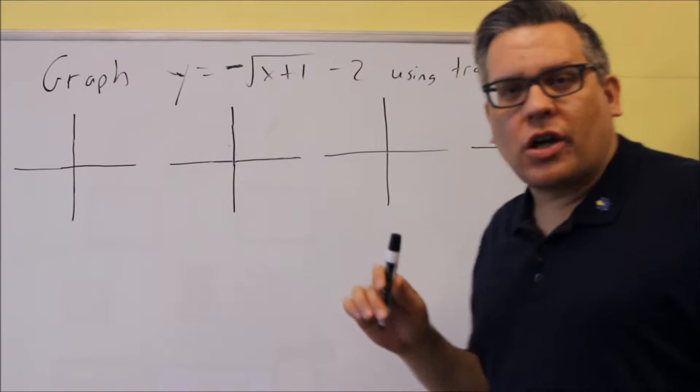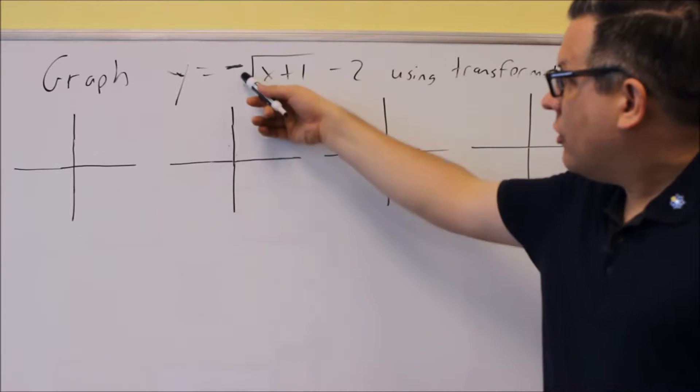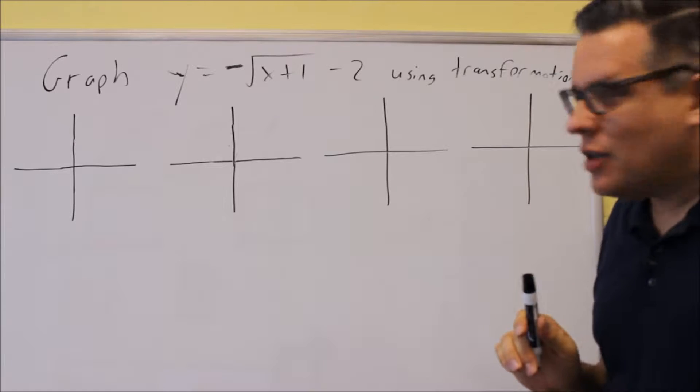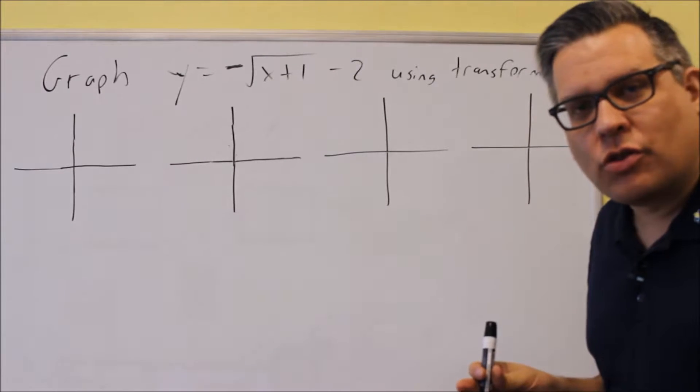Let's do another one with a square root. Now this time we have an extra transformation going on. You have a negative on the outside, you have x plus 1 inside, and then minus 2 on the outside. So that's three different transformations we're going to do in this one.